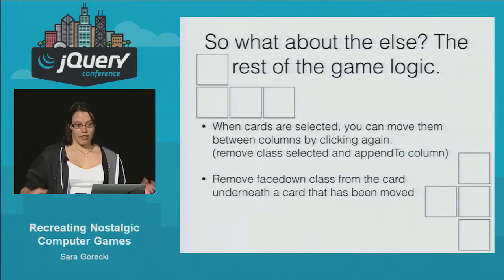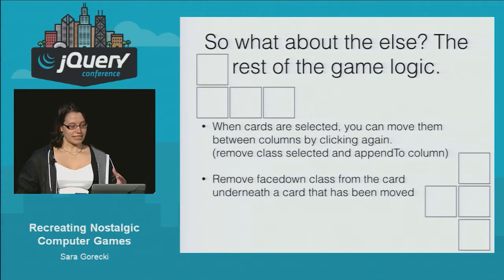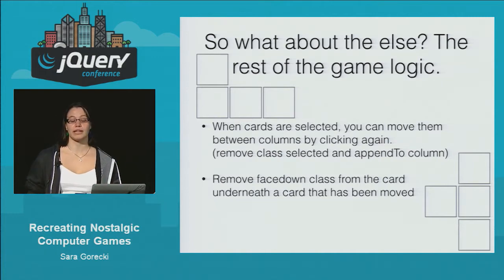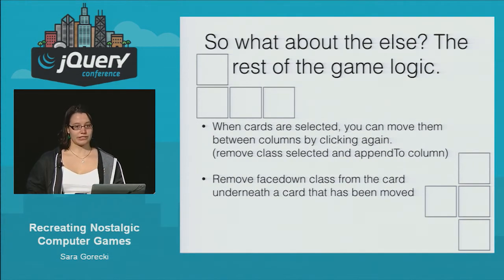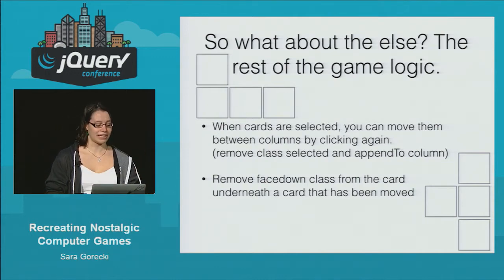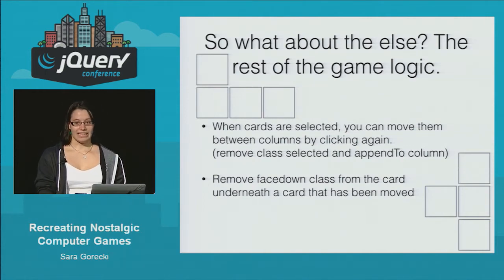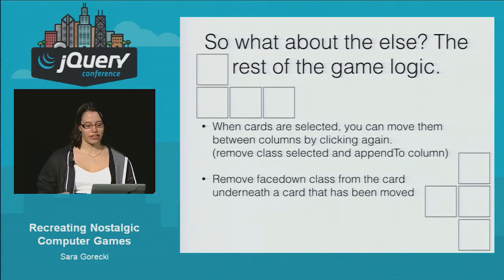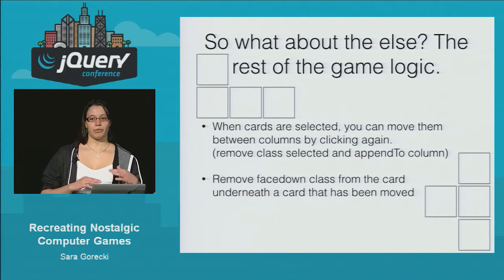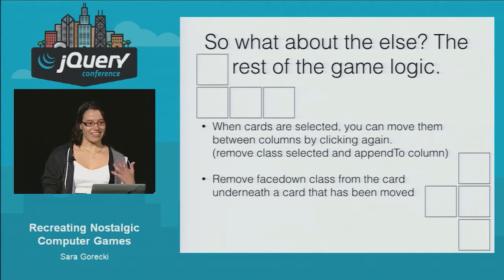What about that else in that huge if-else statement — the rest of the game logic? A lot of it just has to do with manipulating the DOM and moving the cards around between different columns. When cards are selected, you move the selected cards to a new column and append them there by clicking, removing and adding classes depending on what you're clicking on. This brings us to a pretty good state in the game — we can click around and move all the cards — but it also lets you do literally whatever you want, with no validation yet.